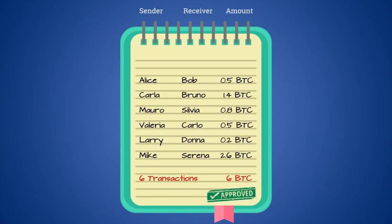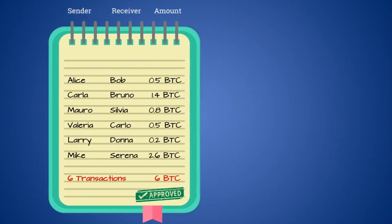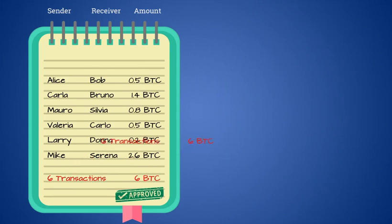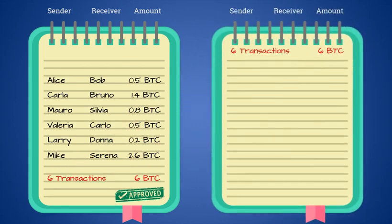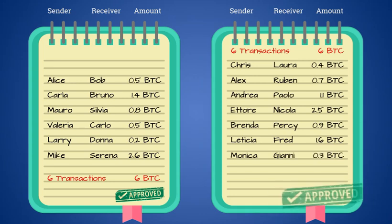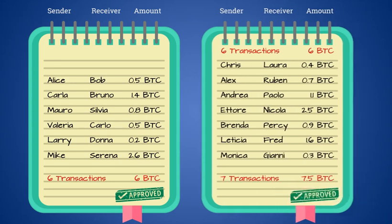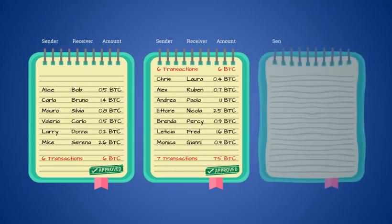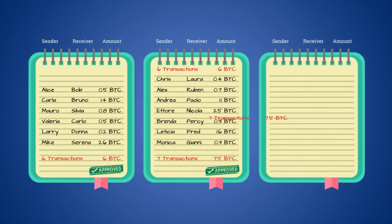After signing the page with indelible ink so that the signature cannot be erased or forged, we move to a new page and write the same number that was written at the end of the previous page on the first line. We then continue entering more transactions until the second page is filled in. We calculate the total and write it at the bottom with the same signature. In this example, the blockchain is represented by the notebook, the pages are the blocks, and the total at the bottom of the page is the so-called hash of the block.